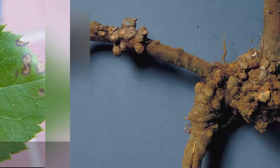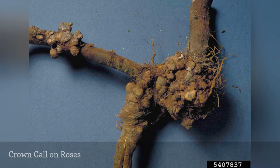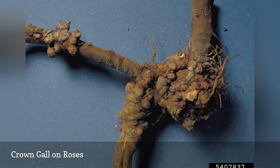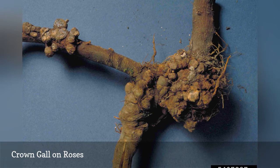Crown gall affects a wide array of plants and roses are definitely one of them. It is a plant disorder caused by the bacterium Agrobacterium tumefaciens, that interferes with the plant's ability to take up water and nutrients. This results in poor growth and weak plants that are easily stressed and injured.